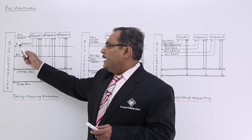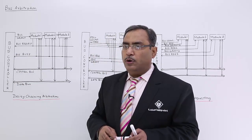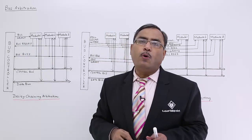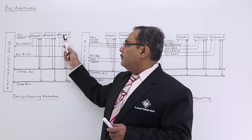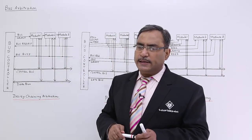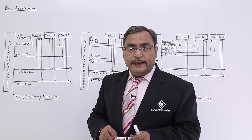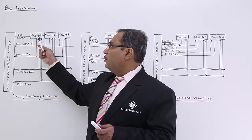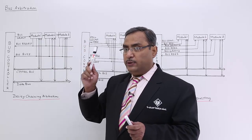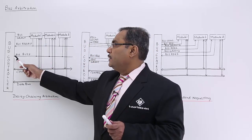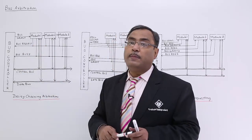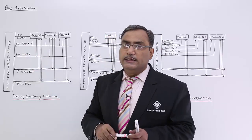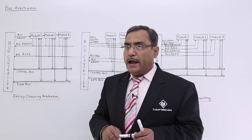If the bus request line is enabled, the bus controller understands that one of the modules is demanding the bus. So it will make the bus grant line enable for module one. Irrespective of the module number, there is a single bus request line, so the bus controller is not in a position to decide which module has actually demanded the bus. If module one made the bus request line enabled, then it will make the bus busy line enabled and access the control bus and data bus. Once access is over, it will make the bus request line disabled.